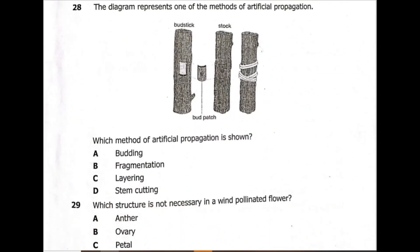Let's go to question 28. The diagram represents one method of artificial propagation. We can see a bud has been removed and taken into a stalk. The stalk has been tied, and this bud will now connect with the plant. Which method of artificial propagation is shown? This is budding, because we have a bud. We can see bud grafting.